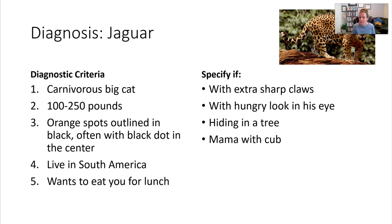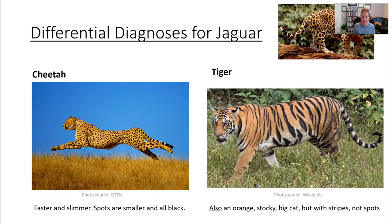Optionally you might add a specifier — for instance, if it has extra sharp claws or a hungry look in its eye. One of the differential diagnoses for jaguar might say: a cheetah is faster, a little slimmer, its spots are smaller and all black instead of having an outline with color in the middle. Notice this is not an exhaustive definition of a cheetah — that would be in the cheetah section. Tiger could be another differential diagnosis: also orange, a stocky big cat, but with stripes not spots.